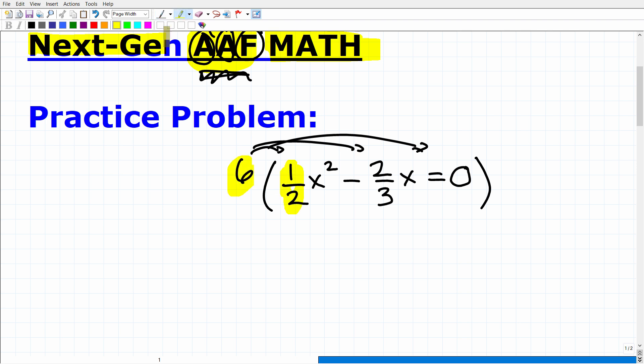So six times one half is going to be what? Two goes into six, three. So three times one is three. This is going to be three x squared. Now, six times two thirds is what? Three goes into six, two. And two times two is four. So that'll be minus four x. And then six times zero is, of course, zero.